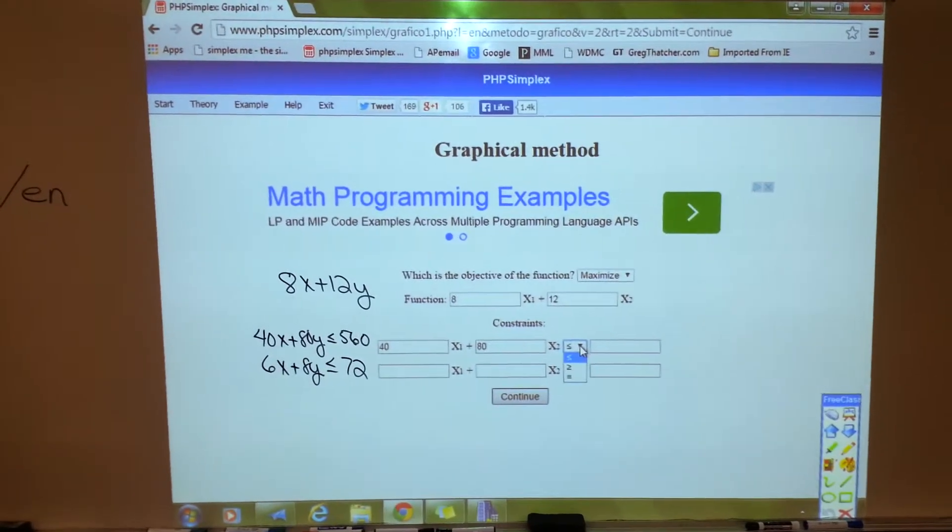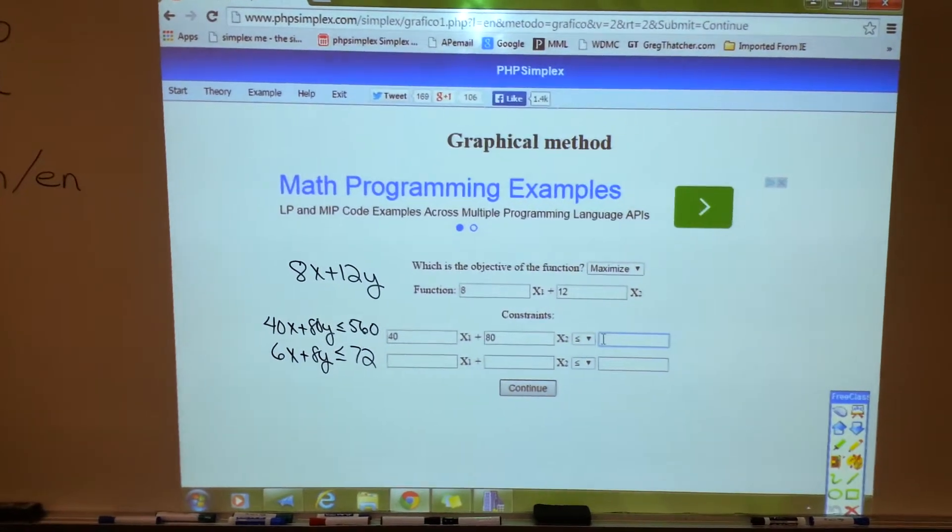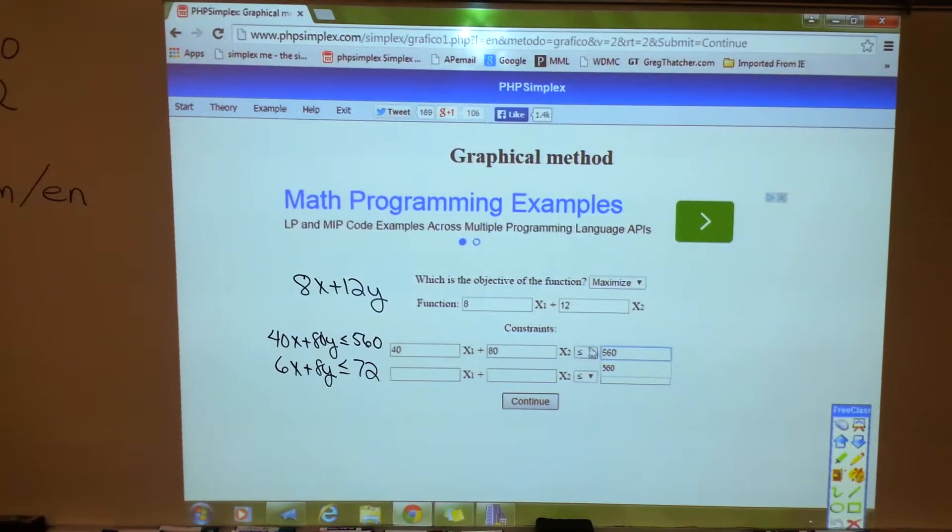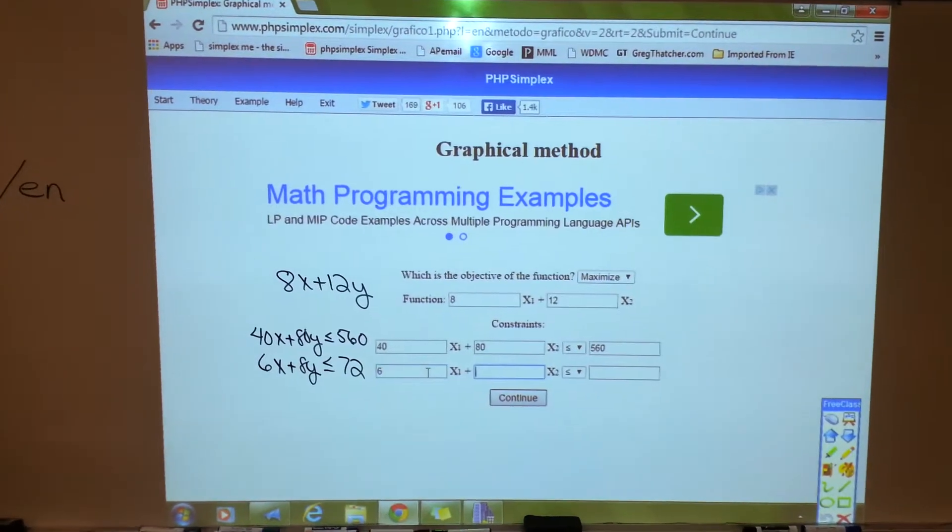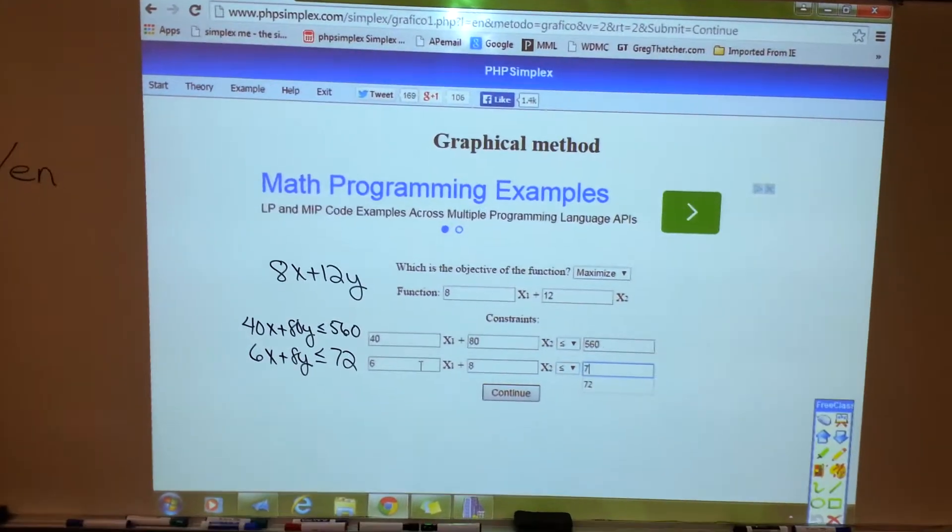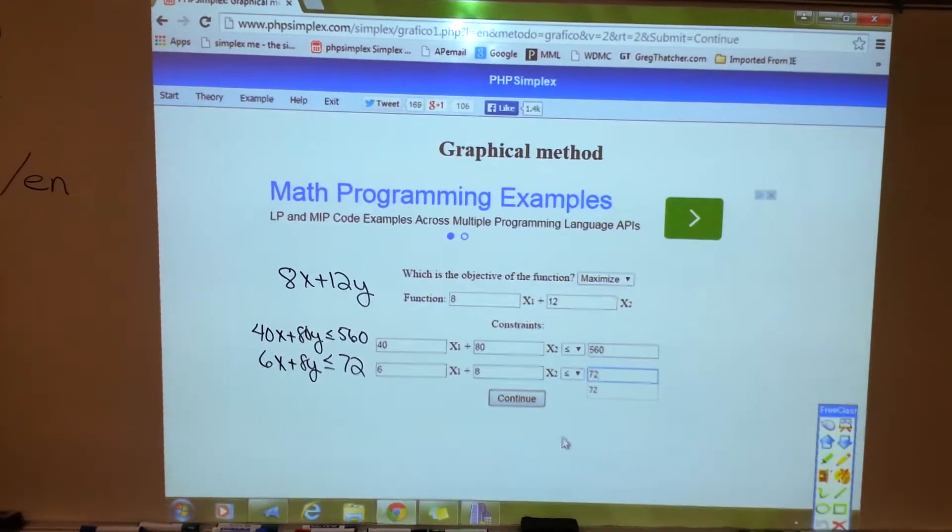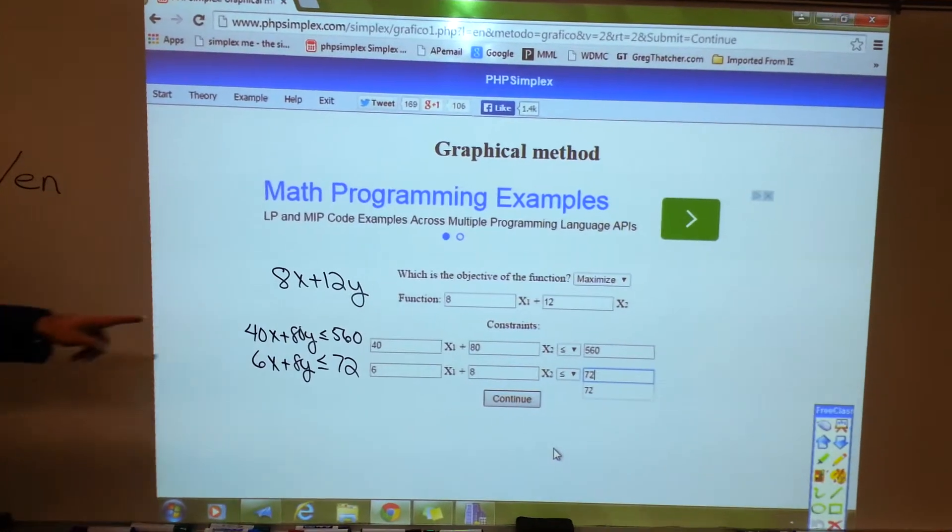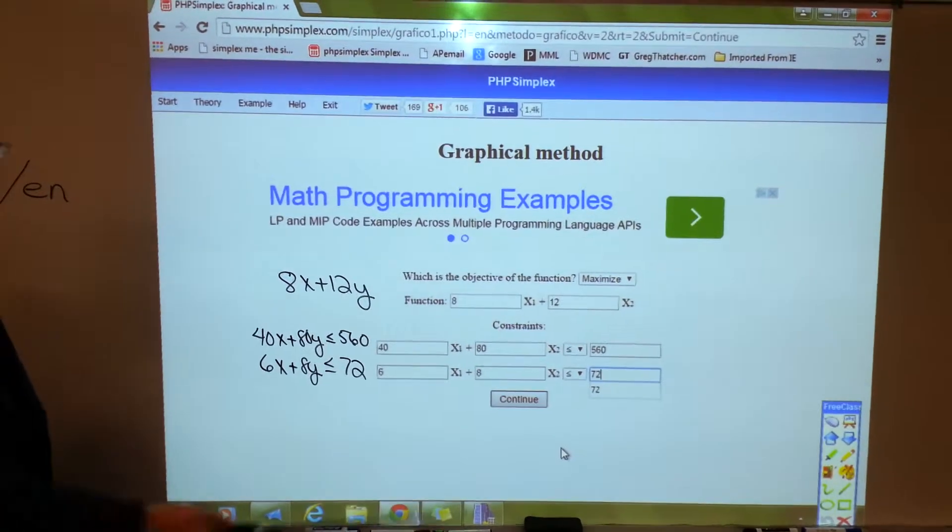And 6x plus 8y is less than or equal to 72. So I'll patch them in here. Now, if you had something other than less than or equal to, you can use the pull down menu to change it. 560, 6, 8, less than or equal to 72. Let me make sure I didn't mistype anything. Nope. So, continue.